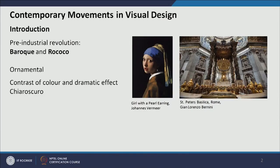There was a term called chiaroscuro — a dramatic effect of light and shadow. We can see this in Vermeer's painting 'Girl with a Pearl Earring,' where there is a lot of contrast in light and shadow. Dramatic effect and ornamentation were the key characteristics of baroque and rococo. We can also see Bernini's intervention in Saint Peter's Basilica in Rome, with a lot of ornamentation.